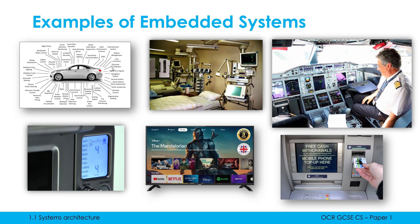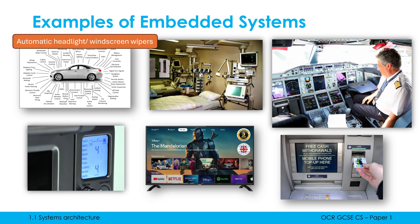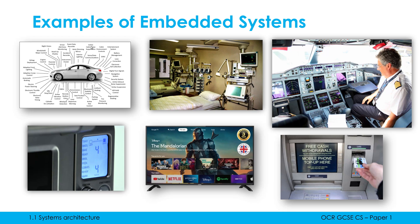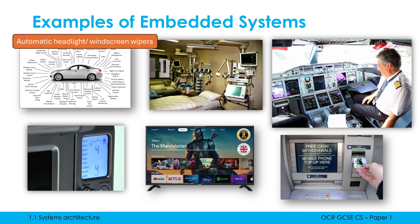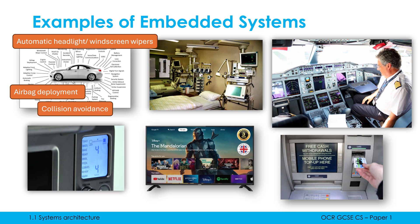Pacemakers and washing machines are two good examples of embedded systems. A car has loads — anything automatic will be handled by an embedded system. For example, automatically turning on windscreen wipers or headlights based on sensors is an embedded system. Detecting collisions and deploying airbags, as well as automatic braking or automatic swerving, will be handled by embedded systems. The satnav itself will also be an embedded system.